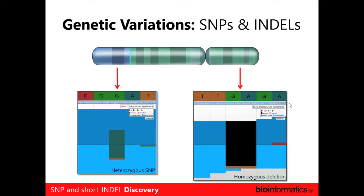Variant calling is really all about trying to find locations in the sample genome that are different from your reference genome. You might be looking for heterozygous SNPs, or homozygous deletions, or more advanced things like structural variants — and that's something that Aaron is going to discuss later today.